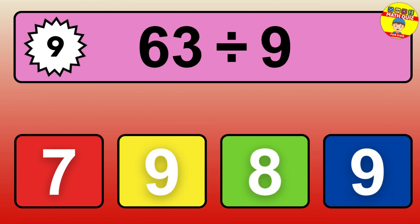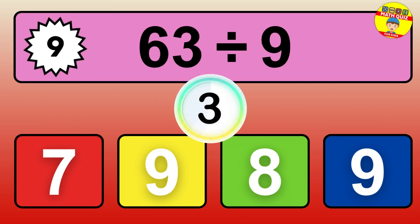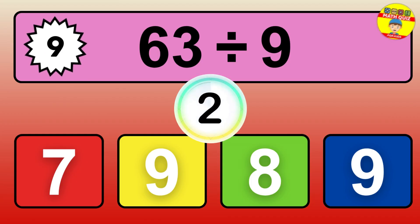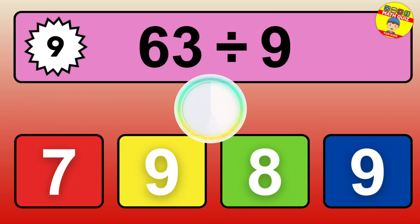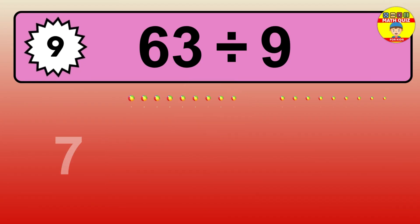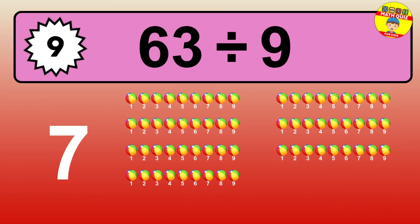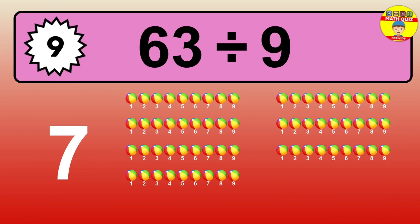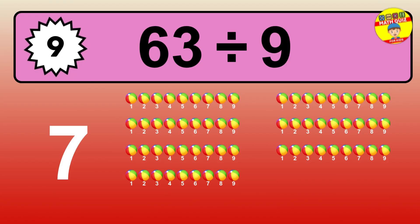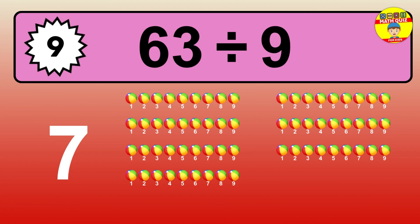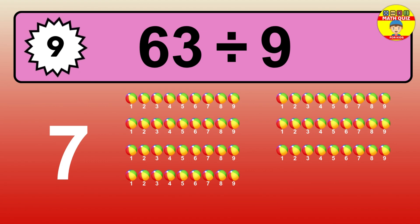18 divided by 2 — time to think. Let's go to the solution. Divide the number 18 by 2. Each group contains 2 units, so dividing 18 by 2 results in 9 equal groups. Thus, the result is 18 divided by 2 equals 9.